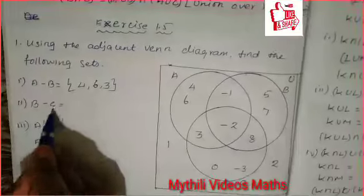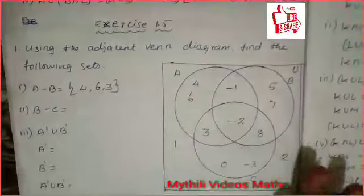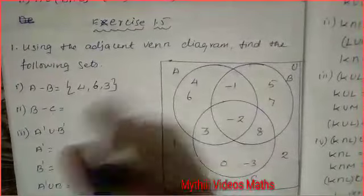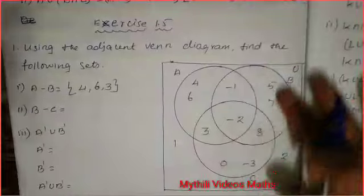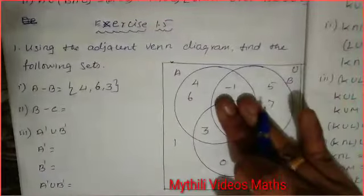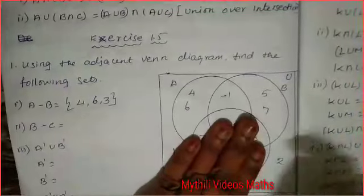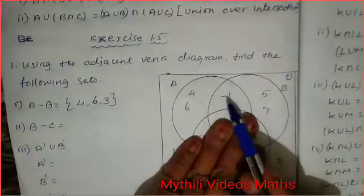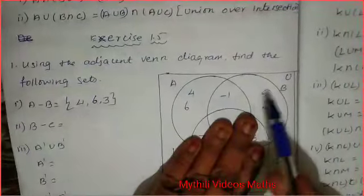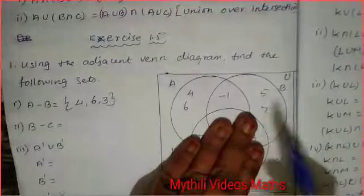Second question: B minus C. B minus C means from set B, subtract the full C set. So the remaining numbers are {-1, 5, 7}. That is the answer for B minus C.